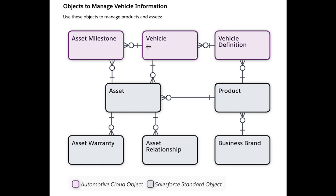At the heart are the product and the asset objects. Both of these are standard Salesforce objects that we are all familiar with as Salesforce practitioners. The product represents simply an item that can be sold to a customer. In the case of the automotive industry, this could be a car, a truck, or even a part, an accessory, a spare part, and so on.